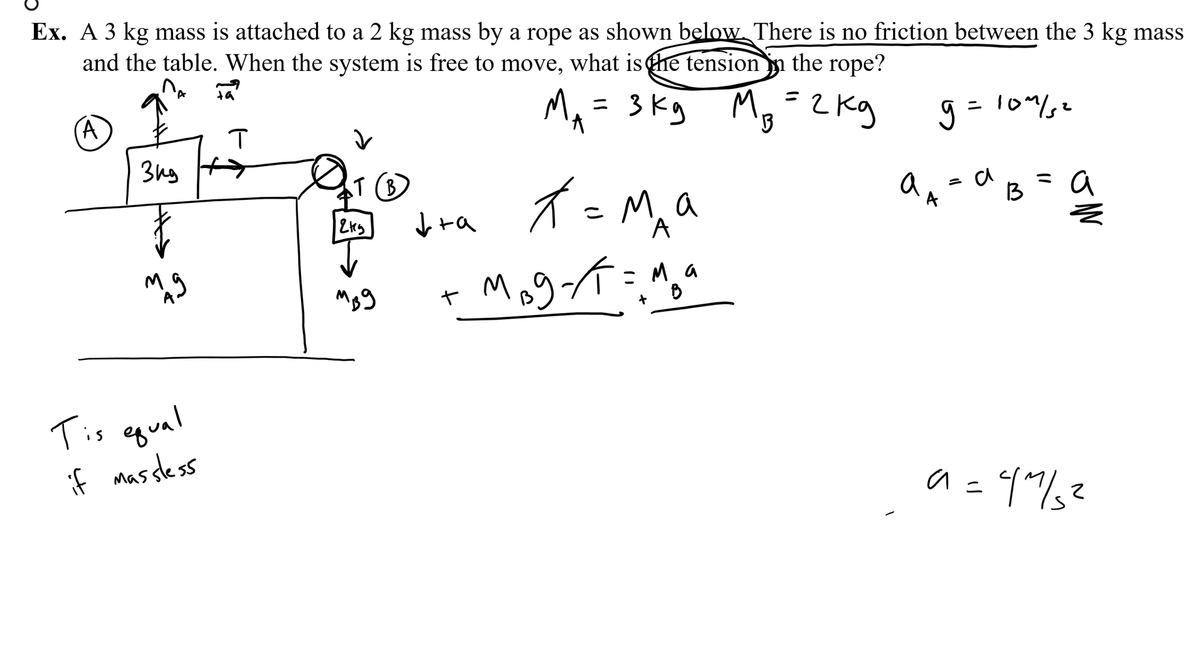So the acceleration is 4 meters per second squared. So let's plug that into this equation to get the tension. The mass of A is 3 kilograms, and the acceleration is 4 meters per second squared. Therefore, I know the tension is 12 newtons. Boom. And that's the answer to the problem. This video is done.